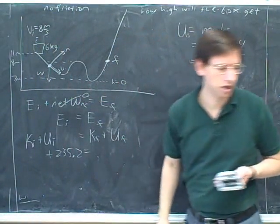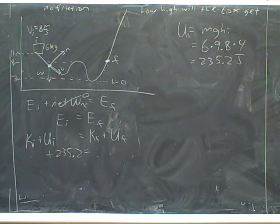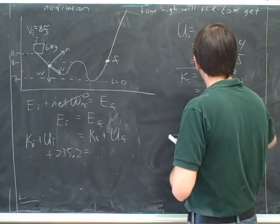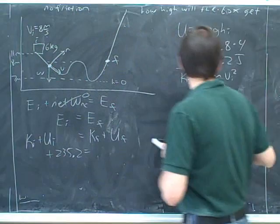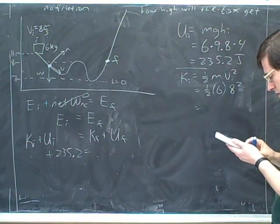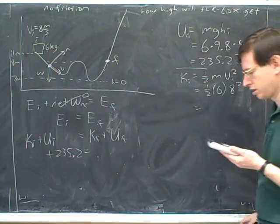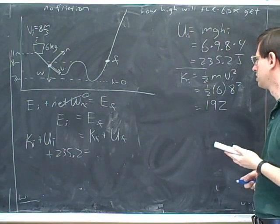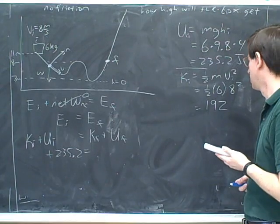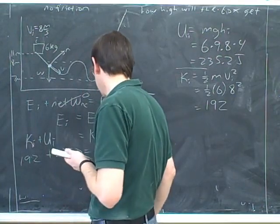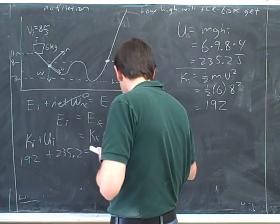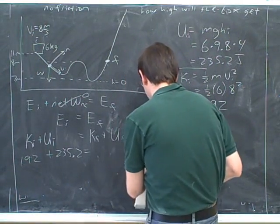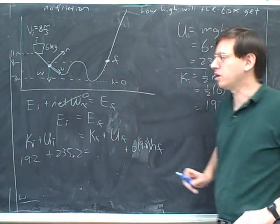And then it starts out with an initial kinetic energy of one-half times 6 times 8 squared. Mass of 6. And here we were given the initial speed of 8 squared. Good. So it has the initial kinetic energy of 192. Good. And we don't know the height of the final position, so we can't really do that. So we can just leave it as 6 times 9.8 times h. So this would be the final potential energy. We know that the mass is 6. We know that g is 9.8. We don't know h final. Good.